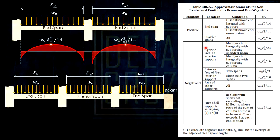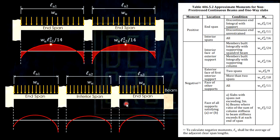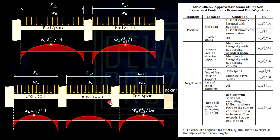'Discontinuous and unrestrained' means a pin support or roller support — any support where the beam is free to rotate. The best example is when the beam is simply resting (nakapatong) on a wall without full restraint. The moment diagram here also shows W·LN²/14, applicable for end spans only.